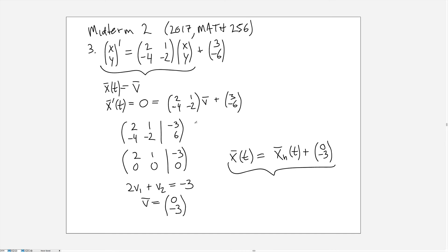There's an added complication we didn't encounter because of the convenient structure of the non-homogeneous term. This matrix is non-invertible, so in general we'd need to include a vt + w as our particular guess. It's actually even worse than just non-invertible: the column space, spanned by the vectors [1, -2] and [2, -4], also spans the null space of this matrix. So for other right-hand side vectors, we'd even need to include a t² term — but that was not part of this problem.